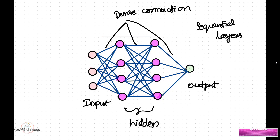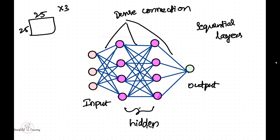So we have understood the terminology: we have the input, the hidden layers, and the output, and the connections are dense connections. I'm placing one layer next to each other in the format of sequential layers. The input layers expect input in the format of a vector. So if I have an input like an image of shape 25 by 25 by 3, where 3 is the number of color channels, I have to make sure I'm converting this three-dimensional array into a one-dimensional array. We call this activity flattening.